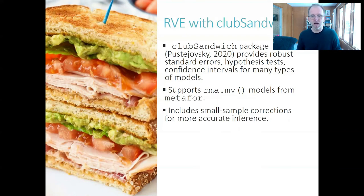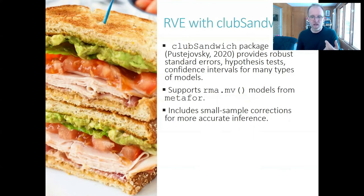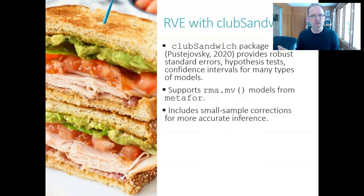You just feed in the model and get out robust standard errors and confidence intervals. One advantage of using the club sandwich package for RVE is that it includes built-in small sample corrections, so that you can trust that the results will remain accurate even if you're working with a fairly small set of studies.